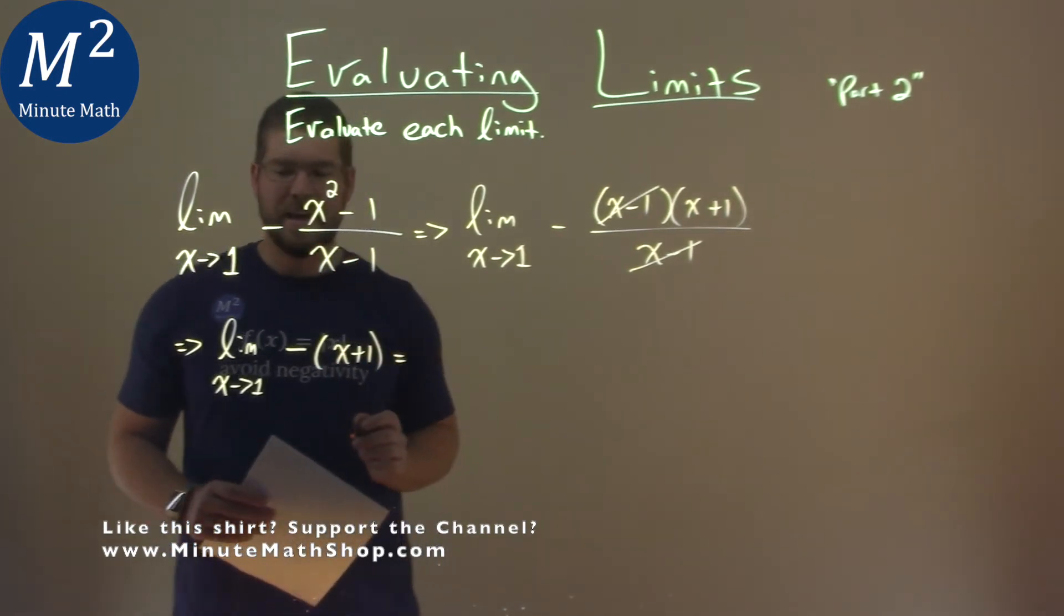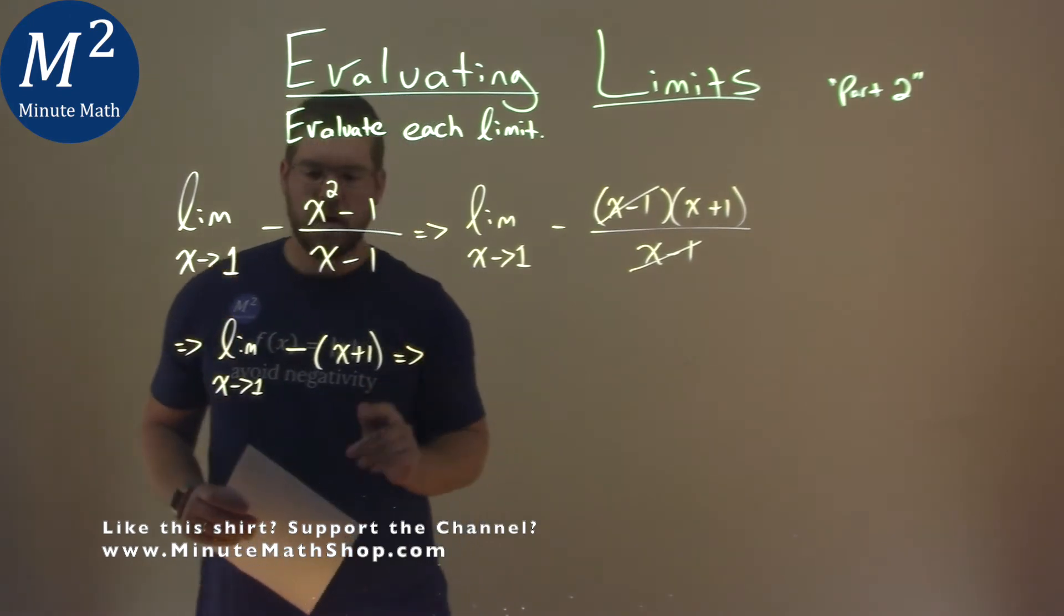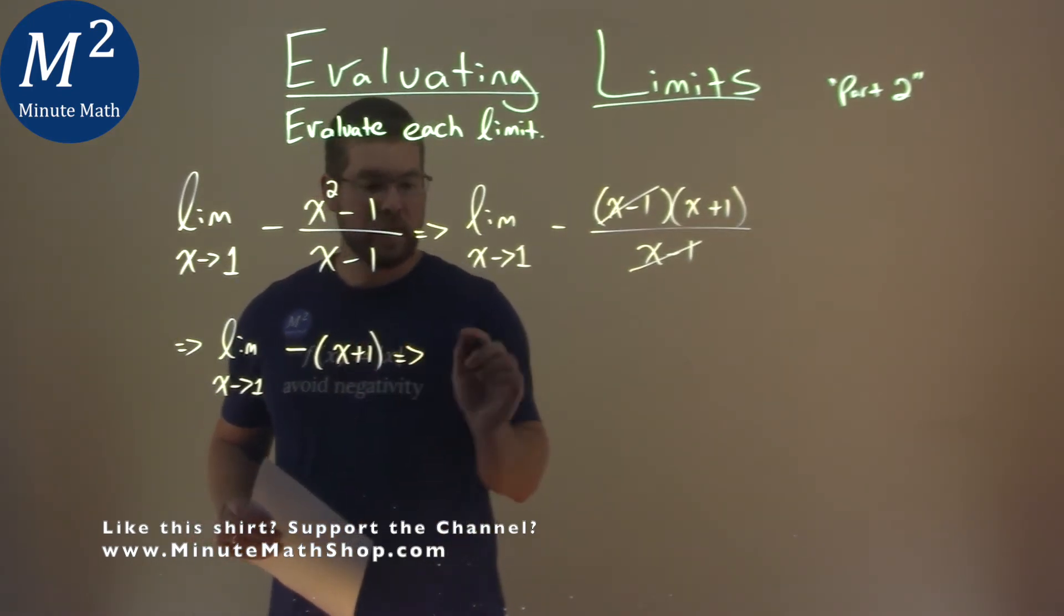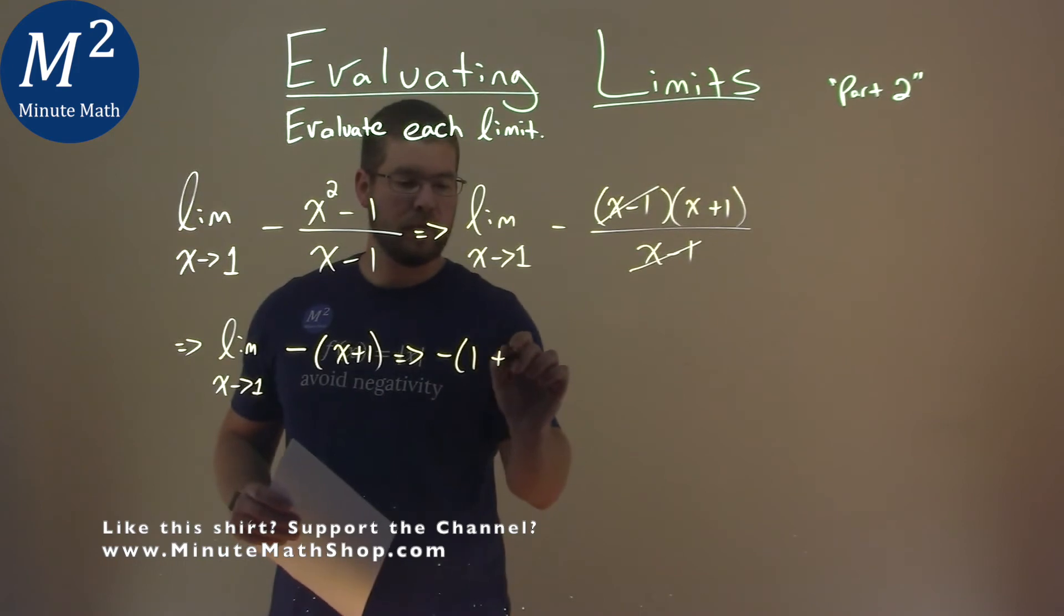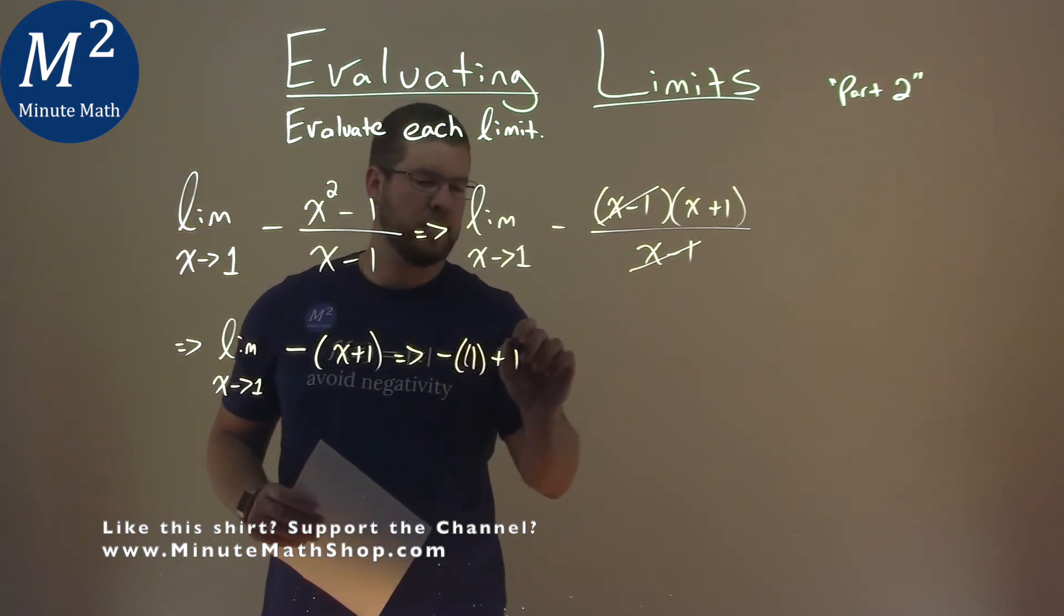It's at this point we can take the limit. So we take the limit, we can put the 1 in for the x and we have negative 1 plus 1. If you want to put a parentheses to show you substituted, you can do it.